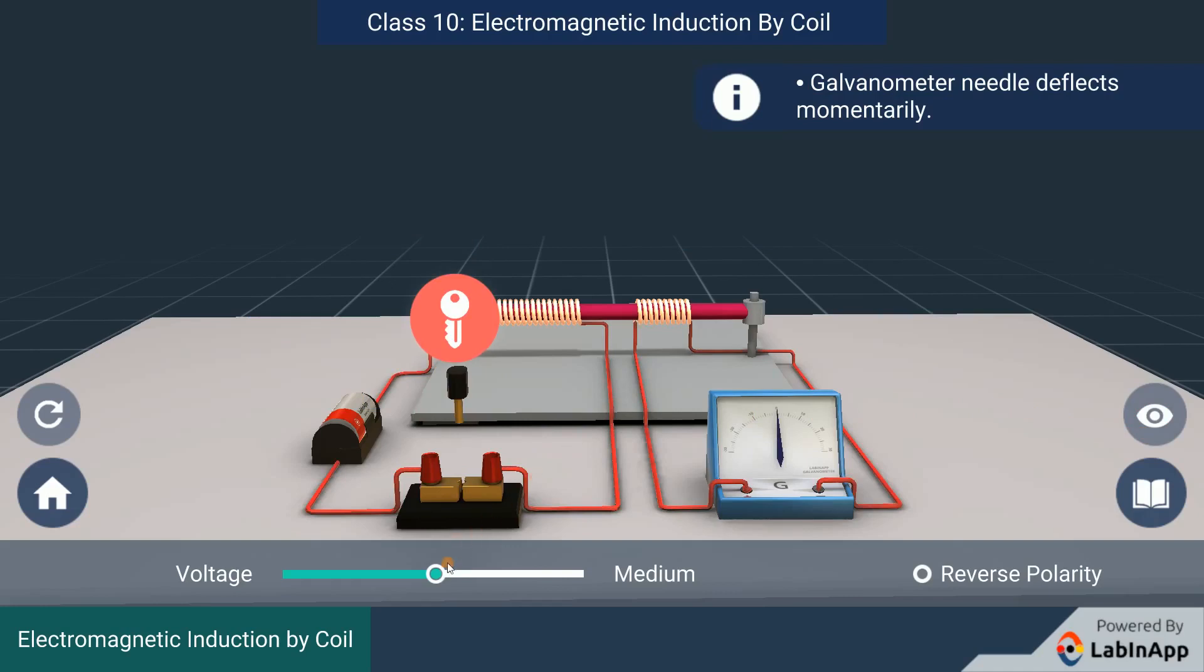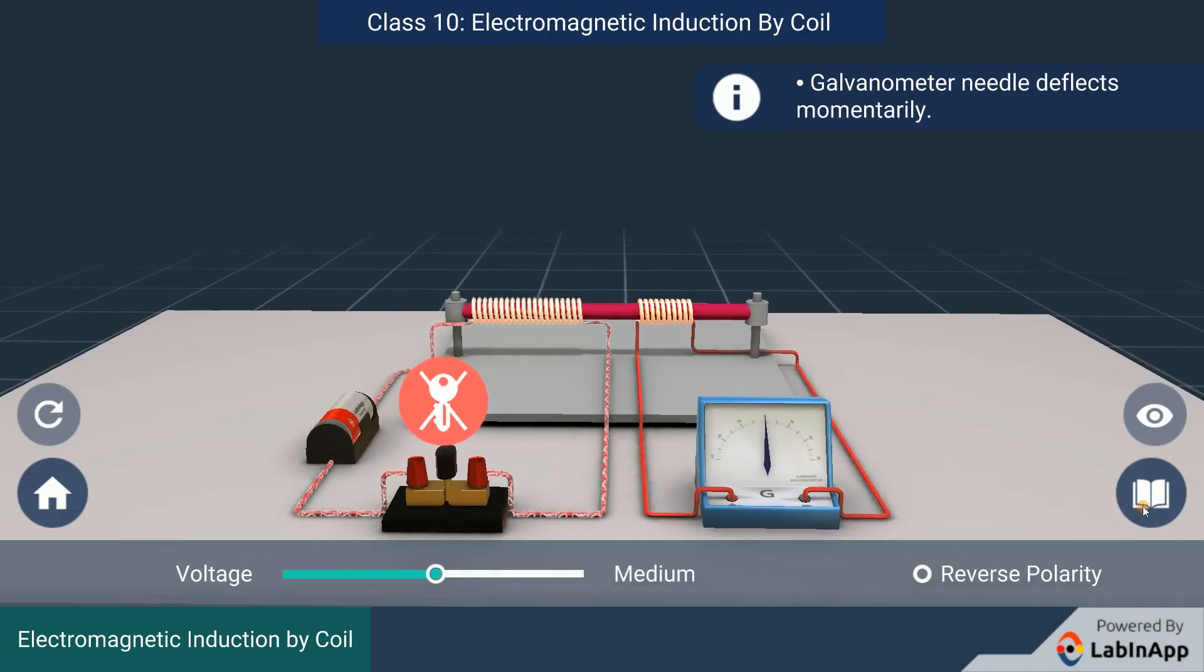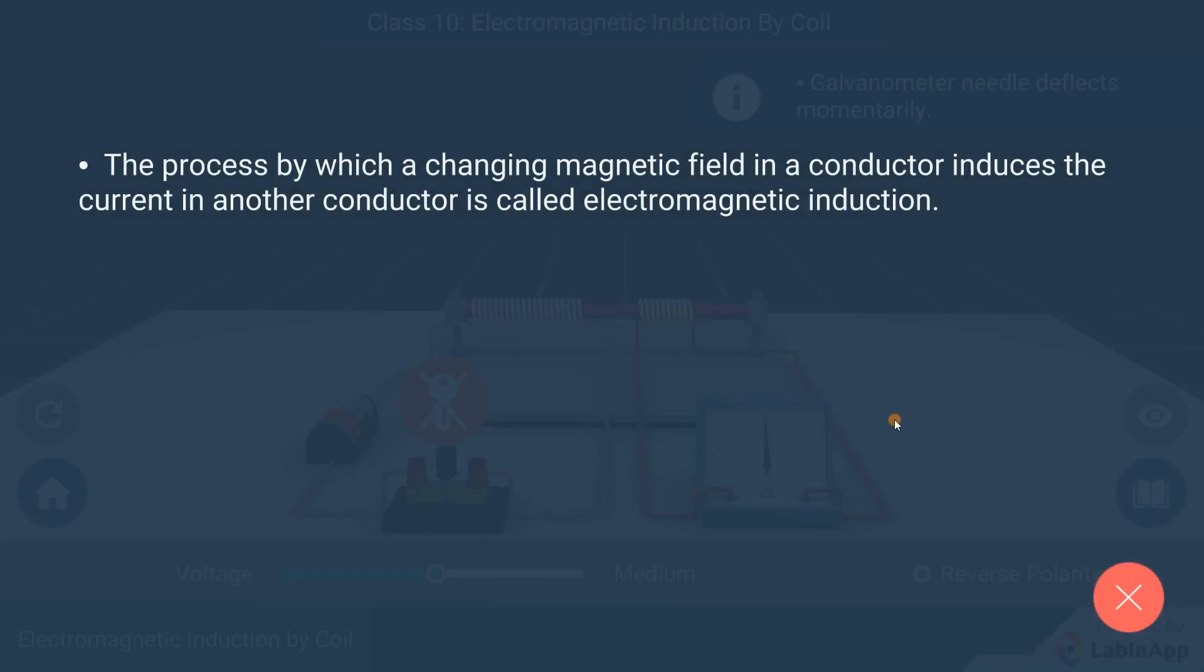As we change the supply voltage, there is a momentary deflection in the second coil. We have observed that a potential difference is induced in the secondary coil whenever the electric current through the primary coil is changing.